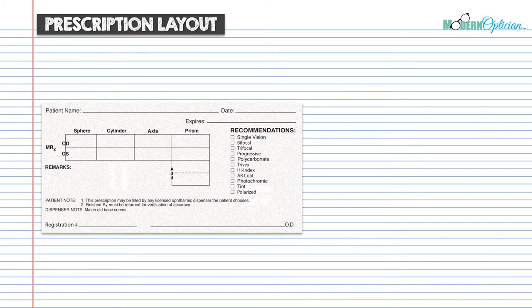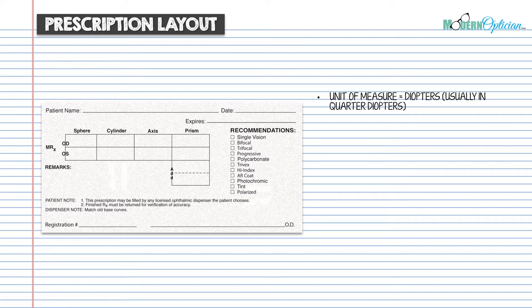Let's cover some of the simple stuff. We have a standard prescription in front of us, and let's go over some of the conventions you should be familiar with. The unit of measure is in diopters, and usually things are prescribed in quarter diopters — so 0.25, 0.50, 0.75. It can be prescribed in eighth diopters, so 0.125, sometimes rounded to 0.12 or 0.13. You see less and less of that nowadays, with the exception of compensated prescriptions or free-form lenses. Mostly quarter diopters.